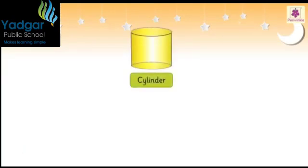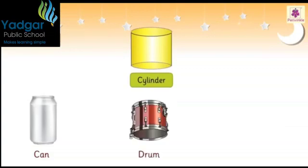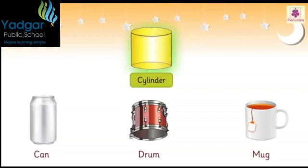This is a cylinder. A can, a drum, and a mug are all examples of a cylinder.